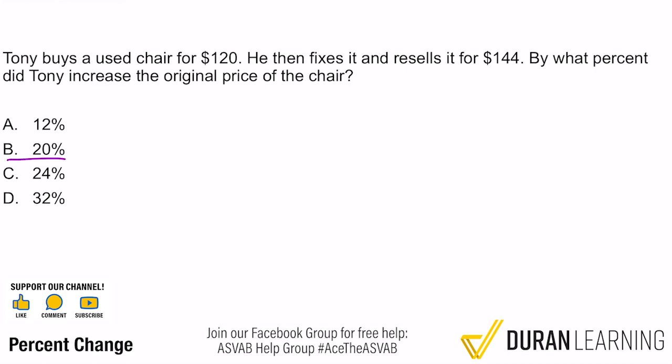With every problem, we gotta point out what the question is and what the key words are. So the question states: by what percent did Tony increase the original price of the chair? The key word there is pretty clearly 'percent.' The question is, what do we do with that? We know we want to find out how much he increased it.